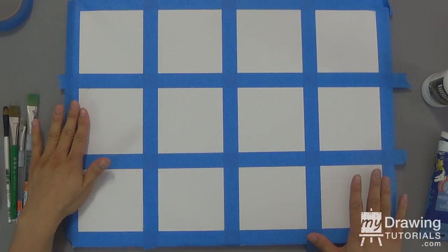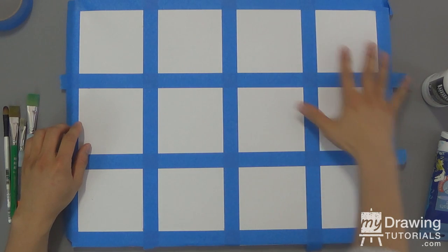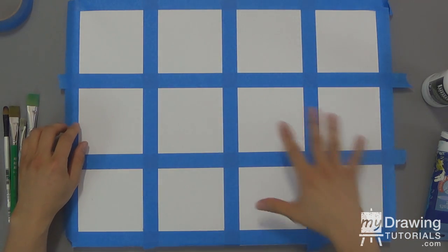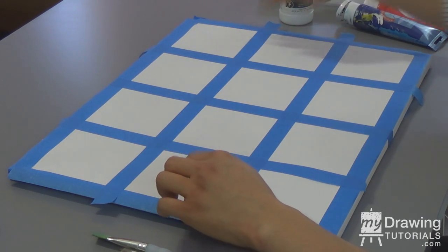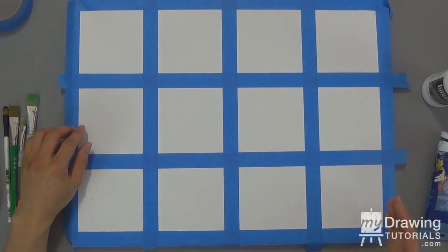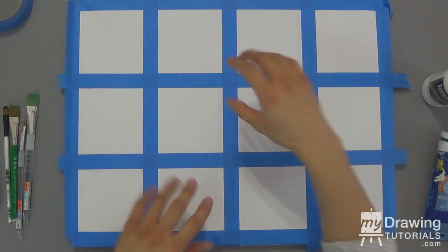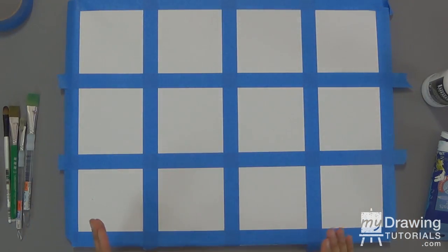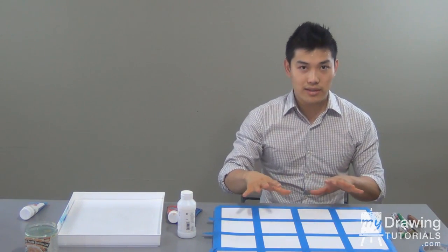So here's the canvas all taped up. I divided the canvas into a four by three grid. So we have 12 squares total, each square four inches by four inches. And this required a little bit of planning because I had to do some calculation in my head with the width and height of the canvas to make sure that all the squares are equal size, they're equally spaced, and the borders are also symmetrical. So if you're using a different size canvas, you're going to have to do some math to make sure that everything is nice and symmetrical and even. But it's well worth the effort because it's going to make the painting look a lot better.